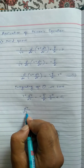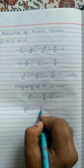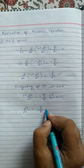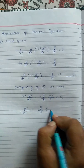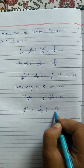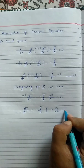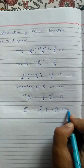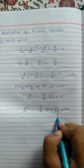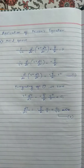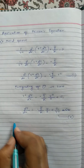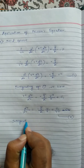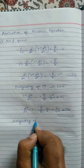Transferring r² to the other side, we get: dT/dr = -q̄/k · (r/3) + C₁/r². This is equation number 2. Now we integrate again to get the temperature profile.